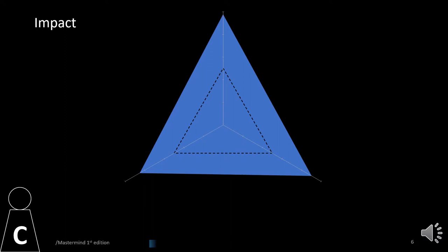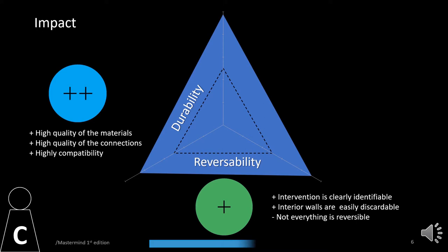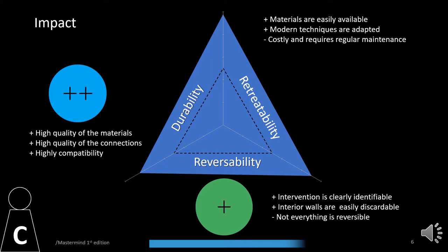In terms of impact, materials used are of high quality, and if maintained regularly, will ensure a long durability to the intervention. They are also easy to identify, and most added non-original parts are discardable. This makes it entirely possible to reverse the intervention back to the original state of the building. Lastly, most materials used for surface treatments are easy to find and apply, facilitating future re-treatments.